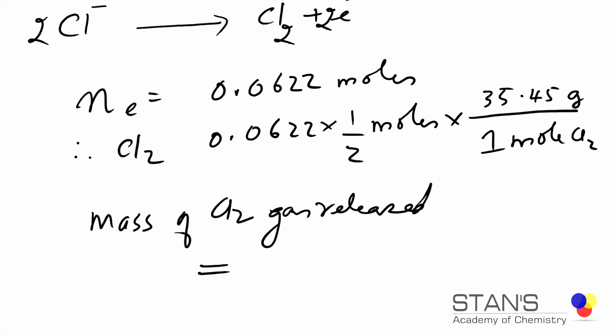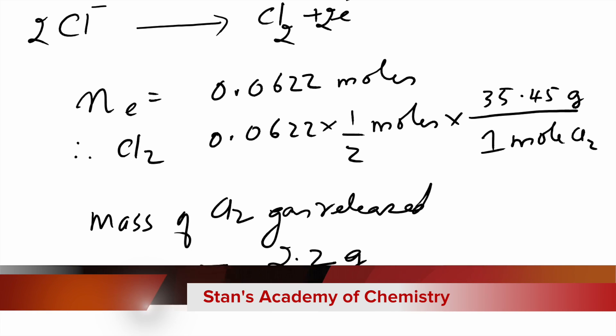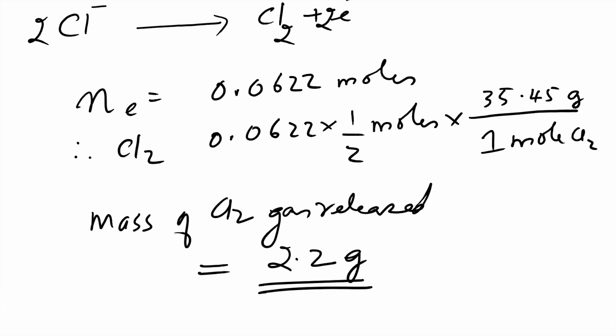Therefore, mass of Cl2 gas released equals 2.2 grams. So if a current of 2.5 amperes is passed for 40 minutes through aqueous solution of sodium chloride, then it produces about 2.2 grams of chlorine gas.